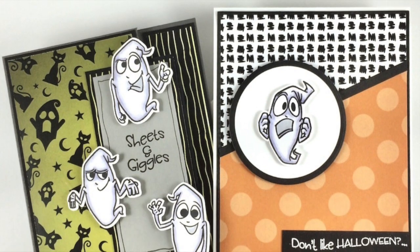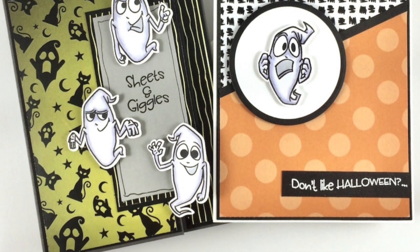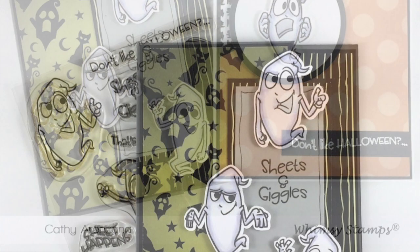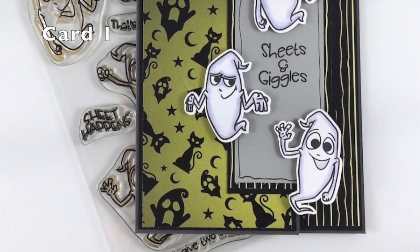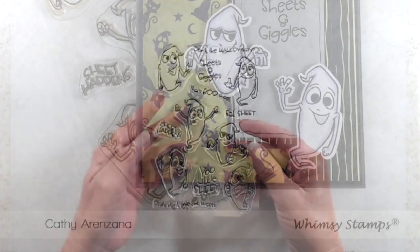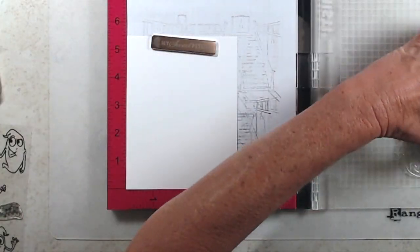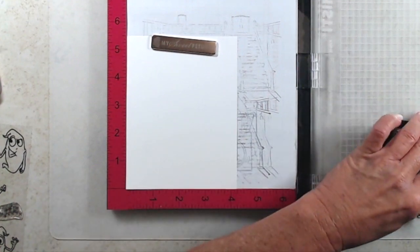Hi everyone, it's Kathy. Thank you so much for joining me. Today I'll be sharing two quick and easy cards using the new Sheets and Giggles stamp set, and I'll also be using the Haunted Paper Pack, the Giraffe Paper Pack, and the Starring Hearts Paper Pack.